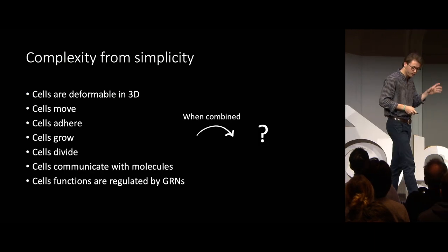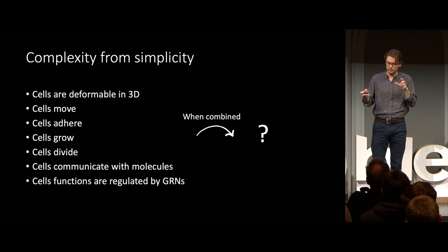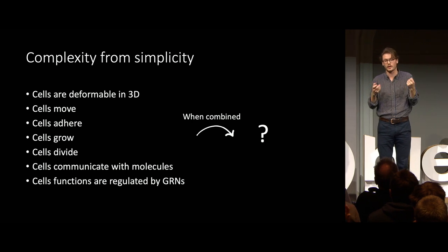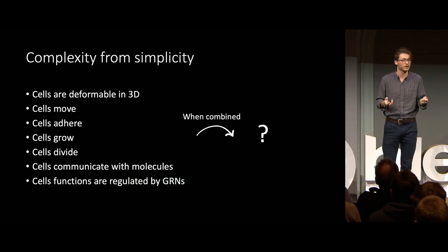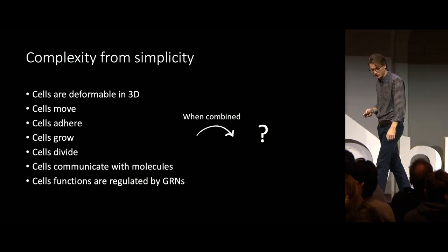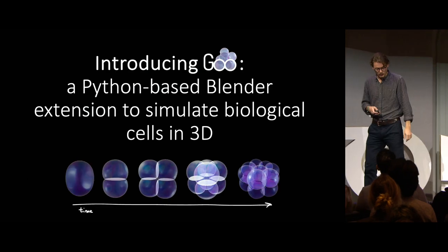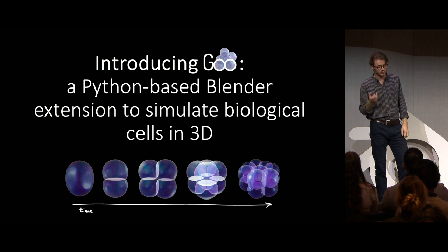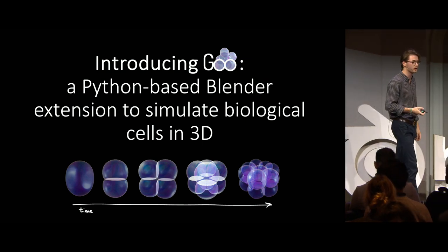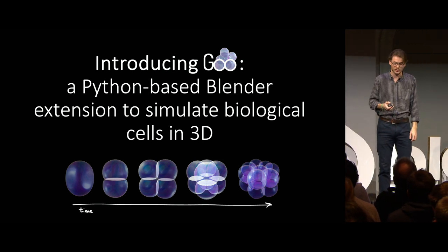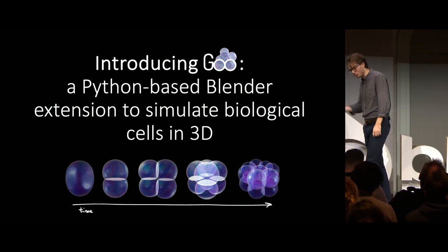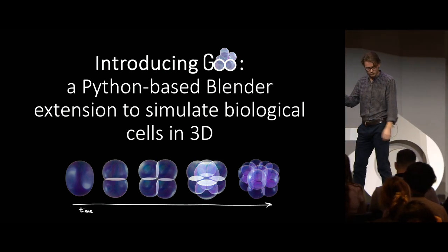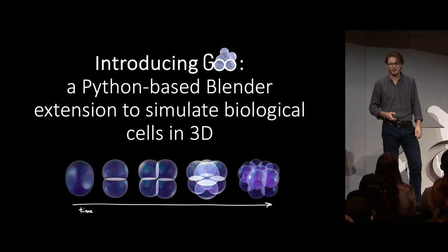Now that we have defined models for each individual rule, what might happen if we combine them together in simulations on computers? It's really this question that drives the development of GU. GU is a Python-based Blender extension to simulate biological cells in 3D, and that's what I've been working on for a bit more than a year and a half.